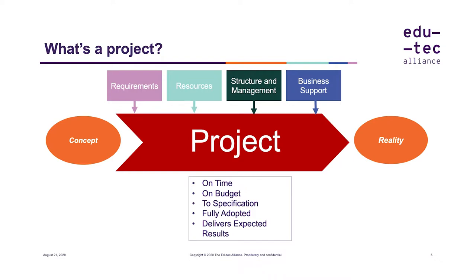How do you deem your project to have been implemented successfully? It should be on time, to the plan agreed in the project management, and on budget. It should be to specification, so it meets those requirements. It should be fully adopted by the business — this is an implementation, not an installation. And it should be proven to deliver the results that you laid out at the outset in the requirements.